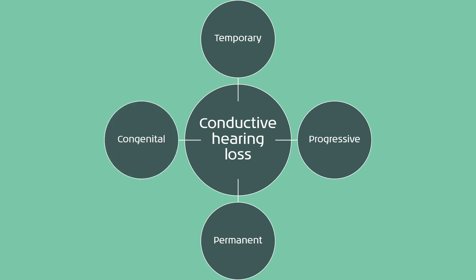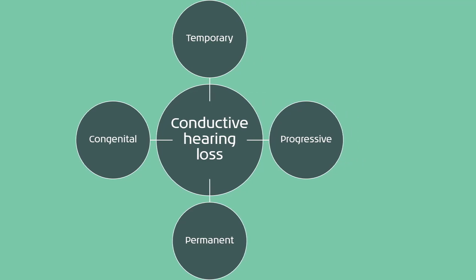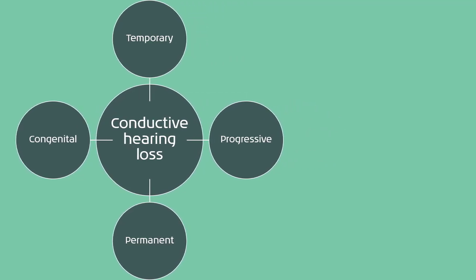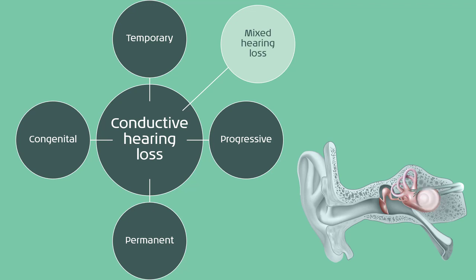One final type of conductive hearing loss to consider is the mixed hearing loss category, where there is a conductive hearing loss in addition to a sensorineural hearing loss. These mixed hearing losses, or conductive overlays, can be permanent, congenital, temporary, or progressive. A very common example is a child with a sensorineural hearing loss who develops otitis media with effusion. OME can affect children with normal underlying hearing and those with sensorineural hearing losses to the same extent. We will spend some time exploring the challenges of managing these conductive overlays today.